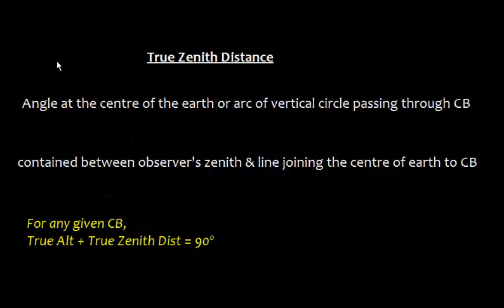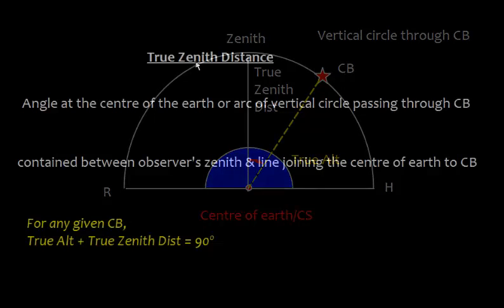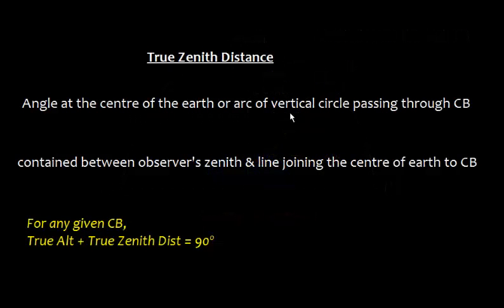Now let's talk about true zenith distance. This is the angle at the center of Earth, or arc of the vertical circle passing through the celestial body, contained between the observer's zenith and the line joining the center of Earth to the celestial body — shown as this angle in the diagram. For any given celestial body, the true altitude and true zenith distance always sum to 90 degrees.